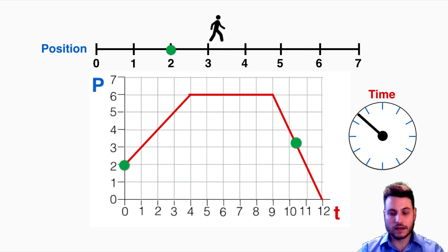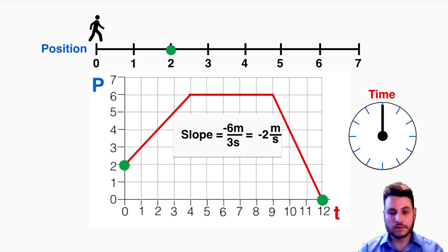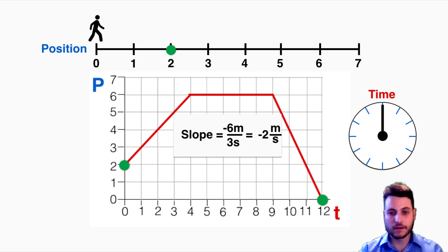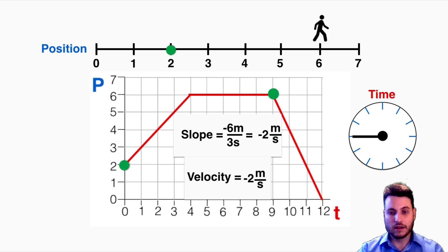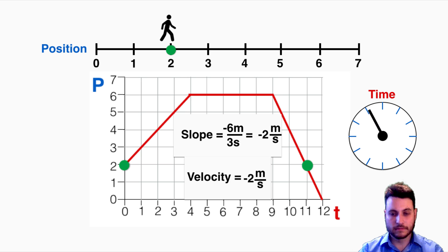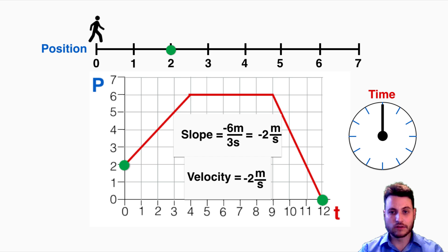For the last section, they're moving down negative 6 meters in 3 seconds, so their velocity is negative 2 meters per second — 6 divided by 3. You can also see that when they move down they're going down 2 meters for every 1 second that passes. This is a really important pattern in position time graphs that we can use to help us draw and interpret them.